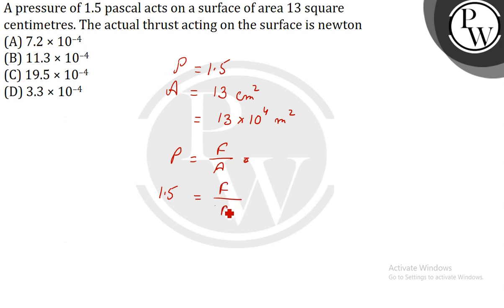Area is 1.5 equals to F by 13 into 10 to the power minus 4. So, F is equal to 19.5 into 10 to the power minus 4.